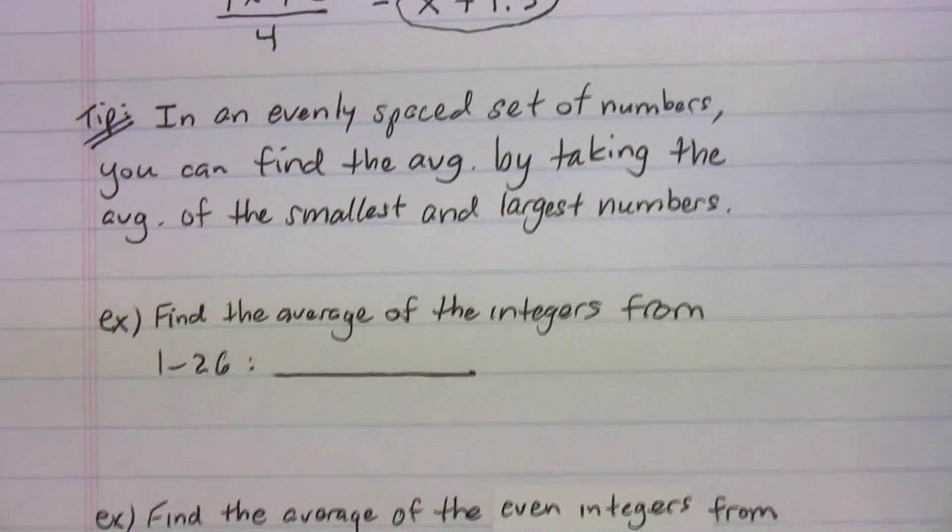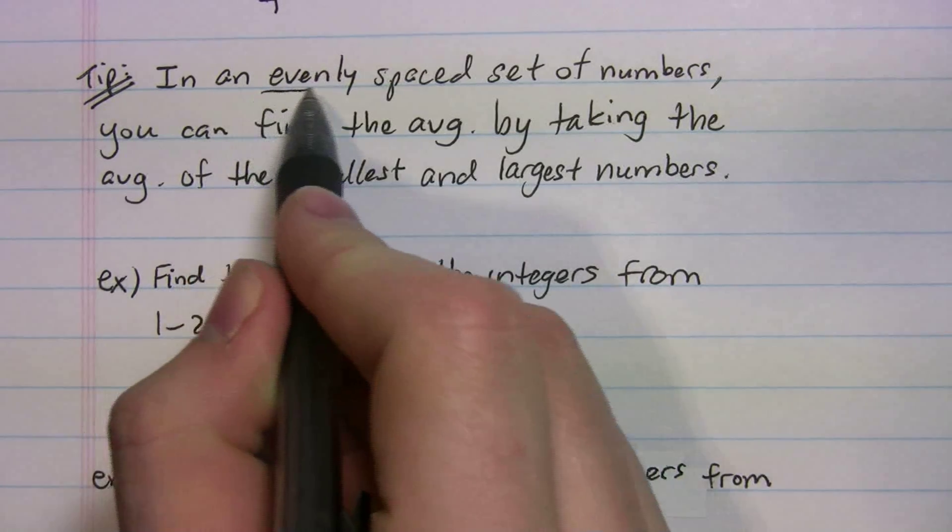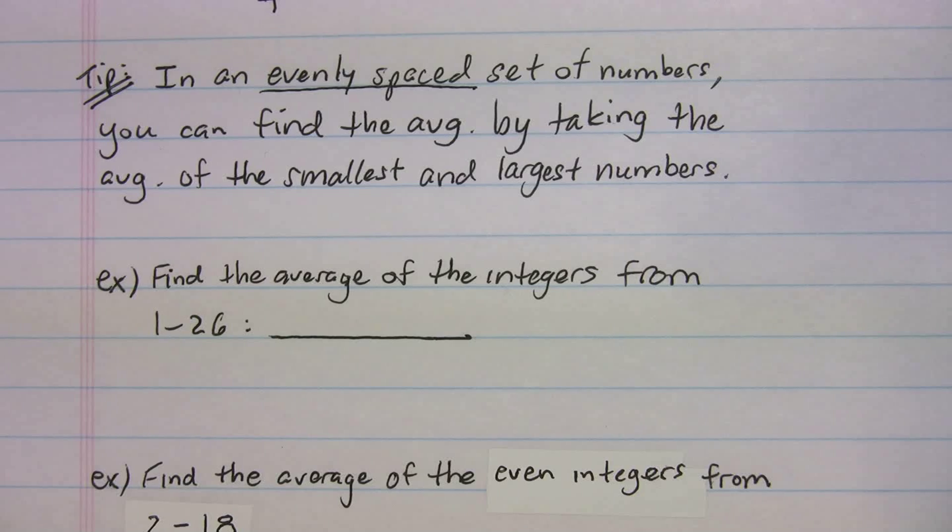Okay. Let me give you a good tip. In an evenly spaced set of numbers, you can find the average by taking the average of the smallest and the largest numbers. And the main thing is that it has to be evenly spaced.